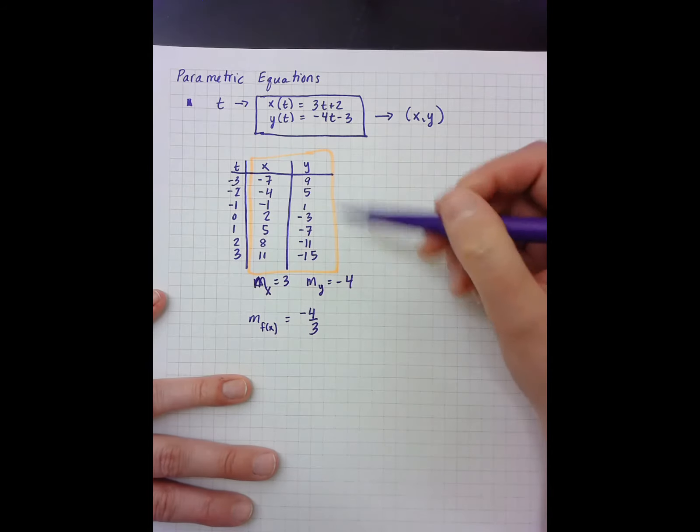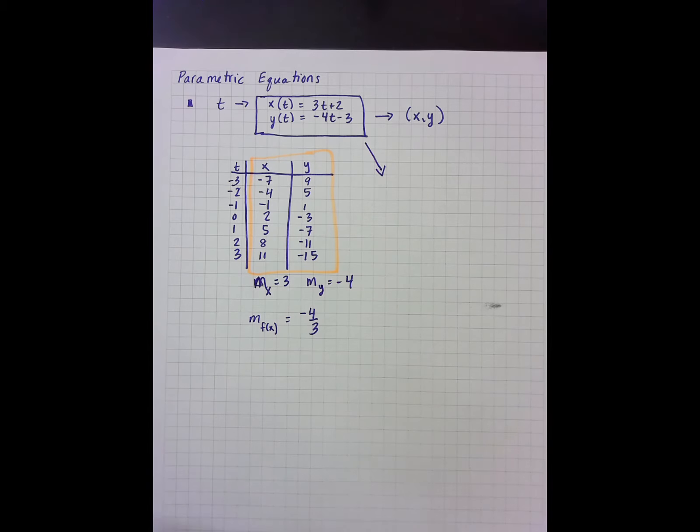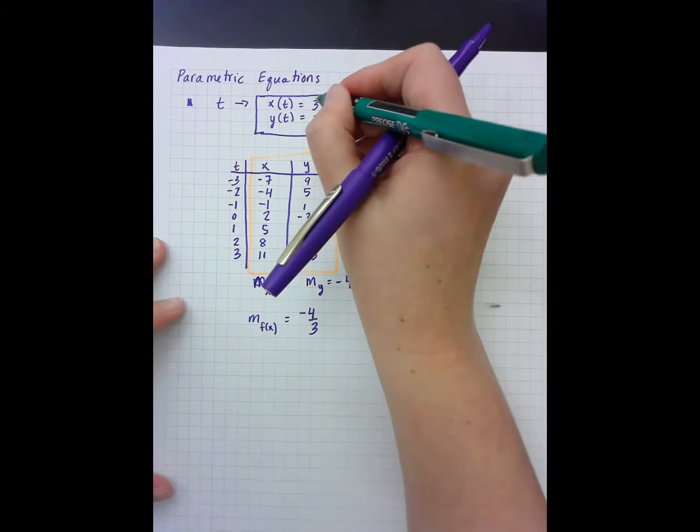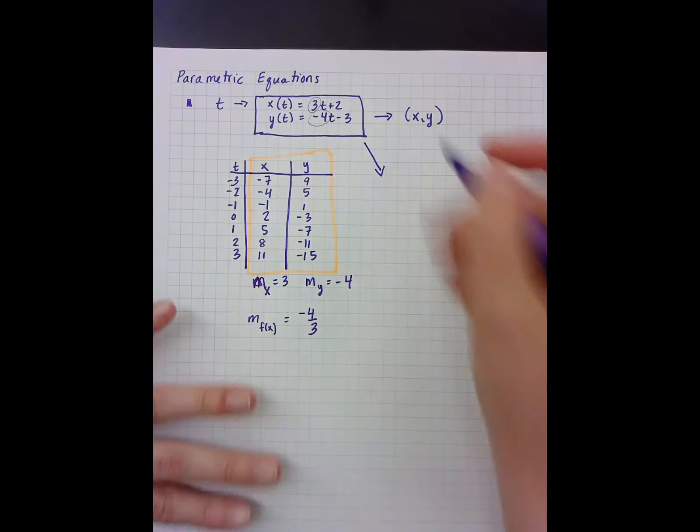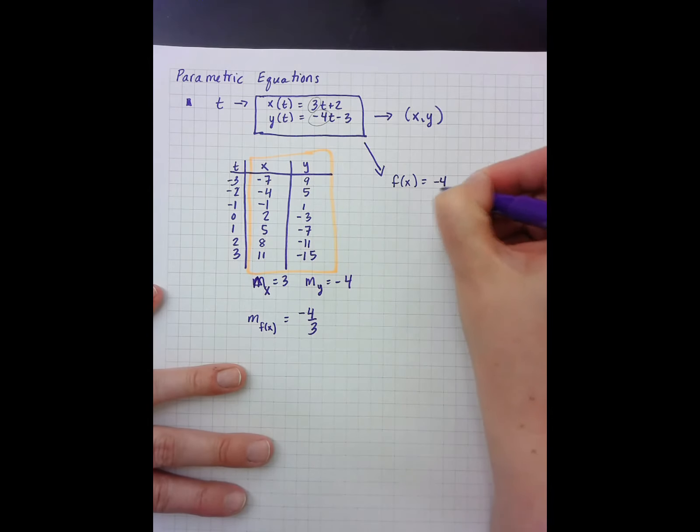So in order to get a new function f of x, I need to look at the two slopes, my x slope and my y slope. And so I can start to write that now. I have negative 4 over 3, there's my slope.